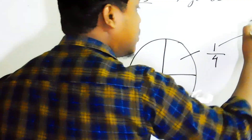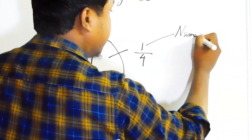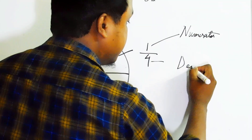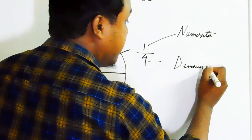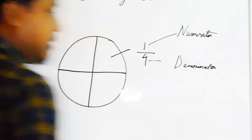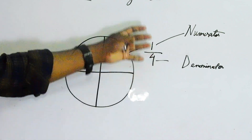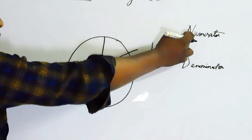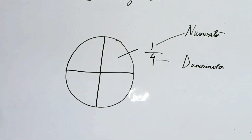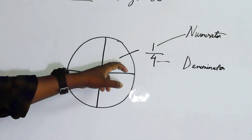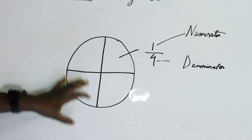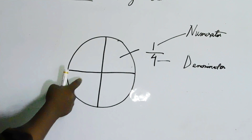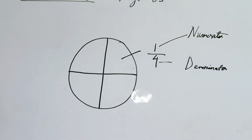The upper number is called the numerator and the lower number is called the denominator. Always remember that when we discuss a fraction, it should have a number in this form — the numerator and the denominator. Here, one by four: one is the numerator and four is the denominator. Each part is a fraction of the whole cake, so we have four fractions here.